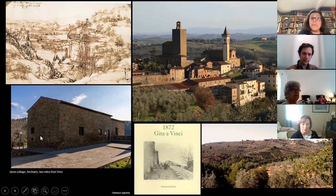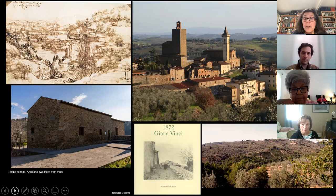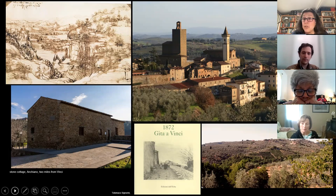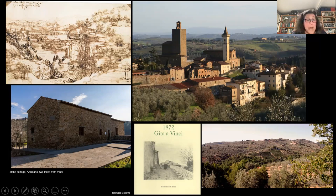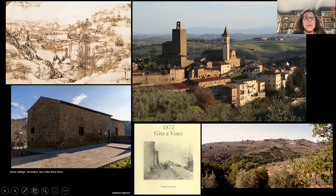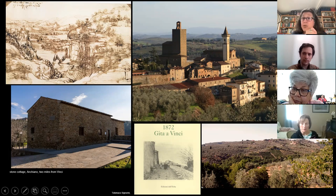He was born to a governmental notary official who had a fairly high standing in the province, and basically a washerwoman mistress. Because of that, Leonardo was illegitimate, but he was raised by his father and stepmother. As a young boy, he used to take paper — a very high-cost commodity — from his father and begin to draw. From a very early age, he would go around the village and just draw everything he saw.